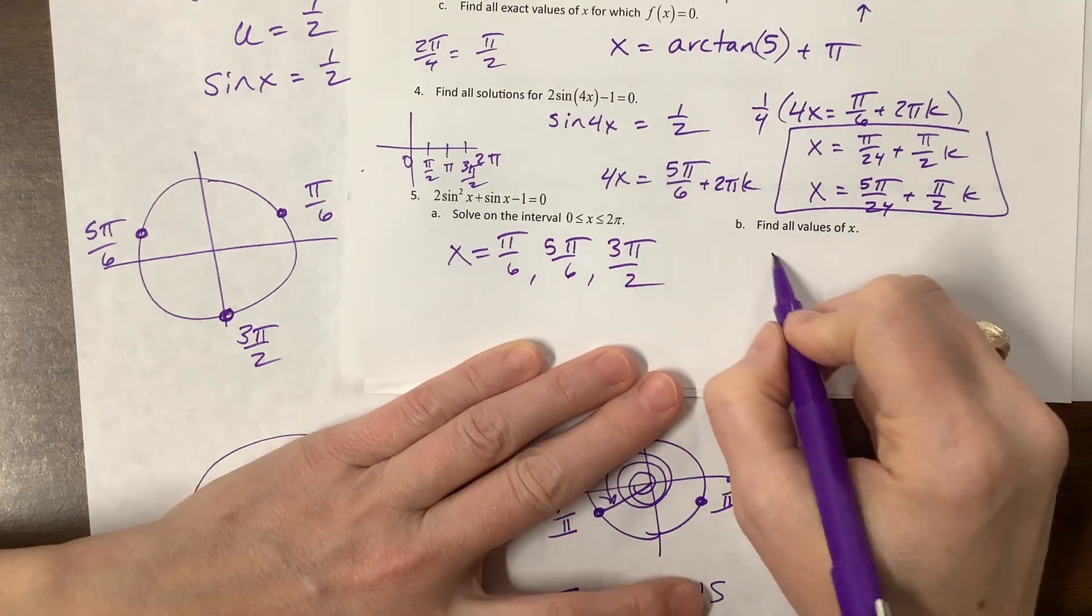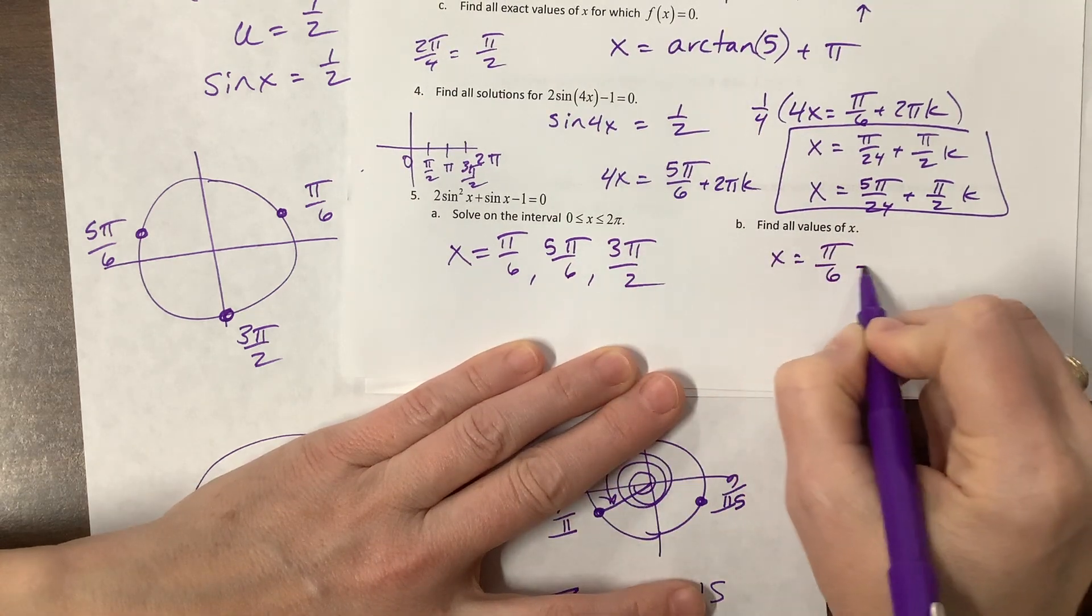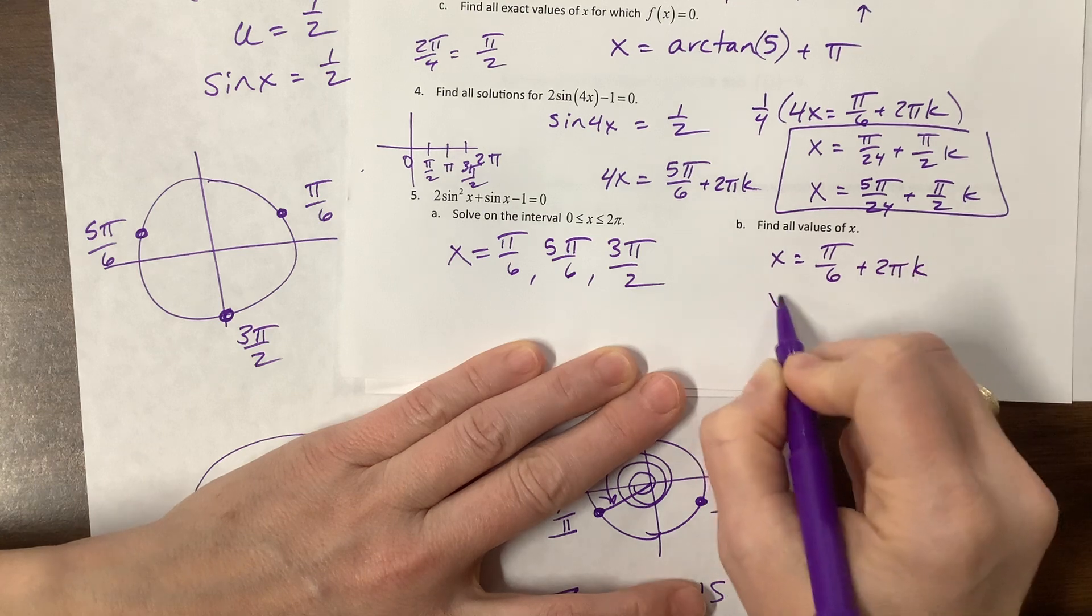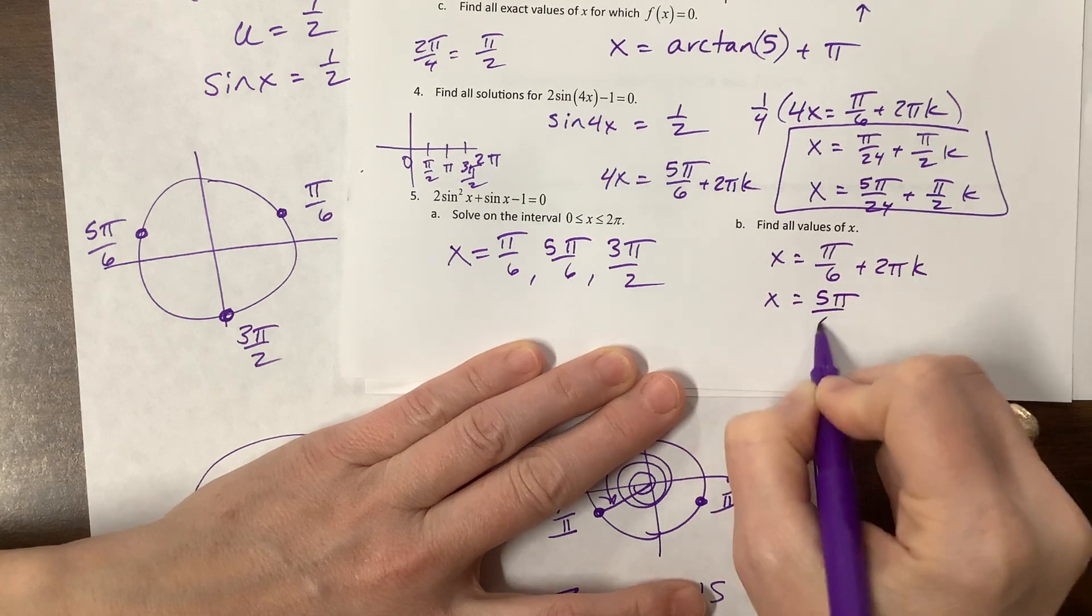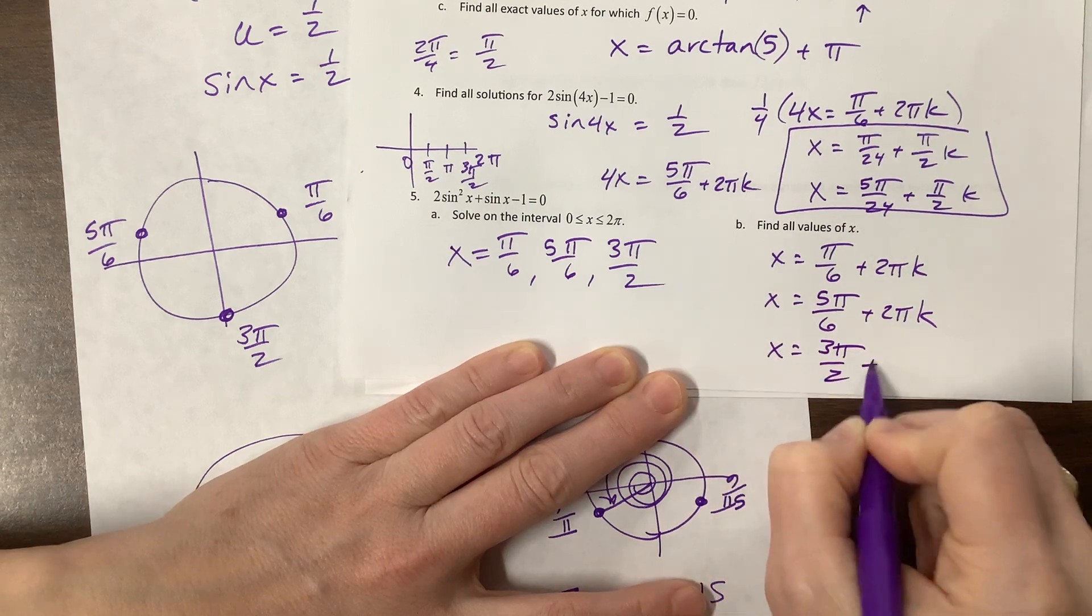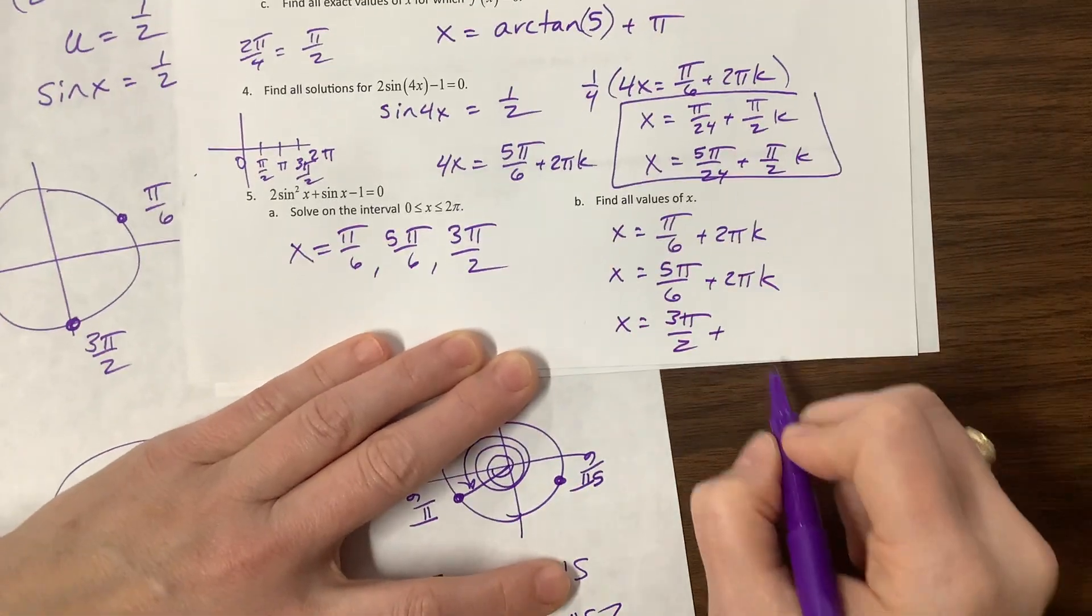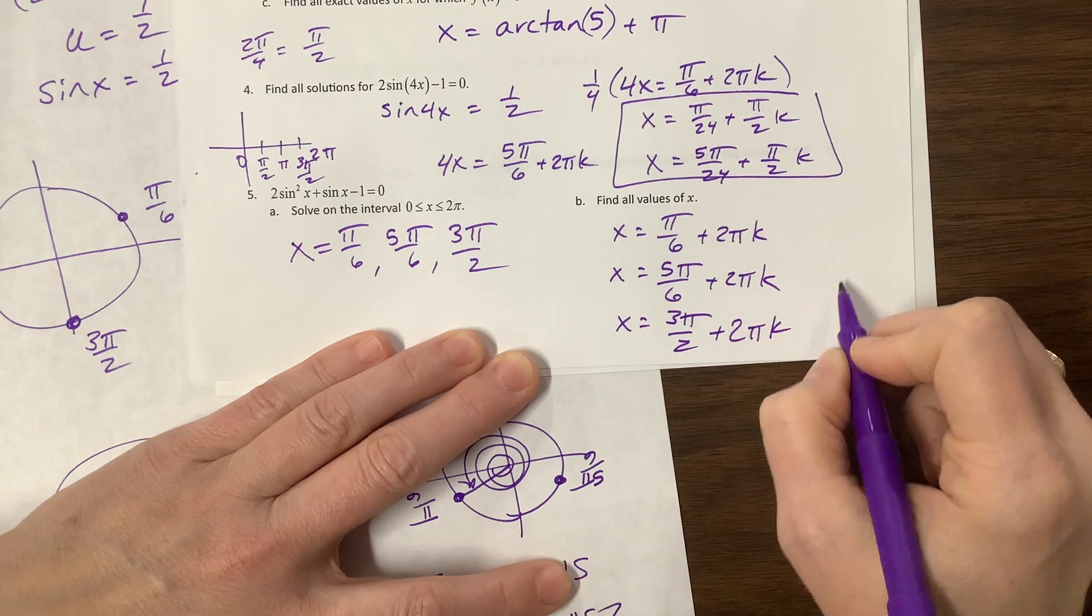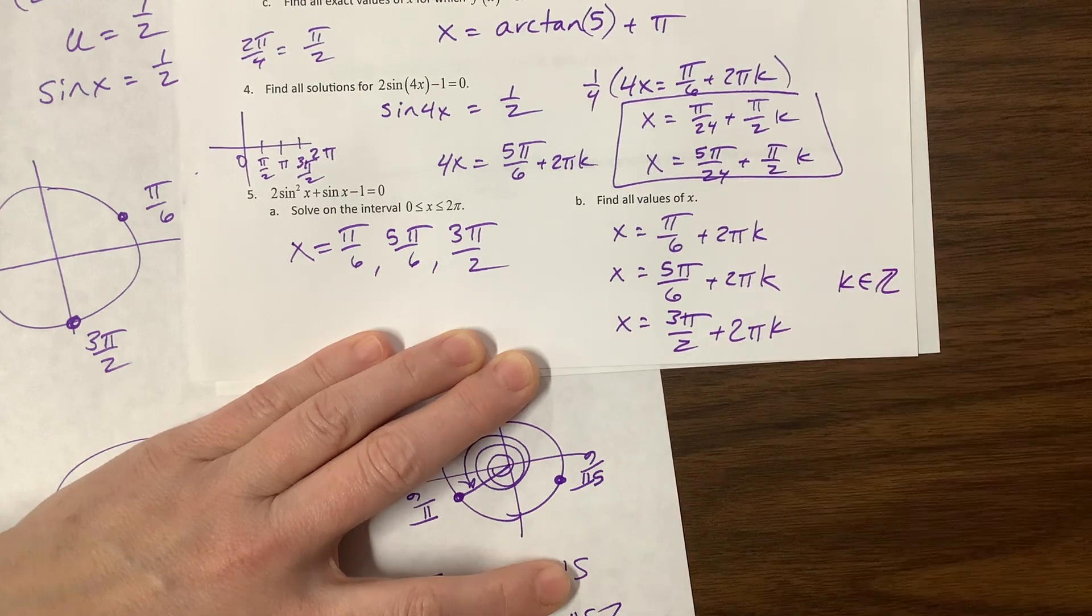Find all values. π/6 plus 2πk, 5π/6 plus 2πk, 3π/2 plus 2πk. And all of these should say k is an element of the integers.